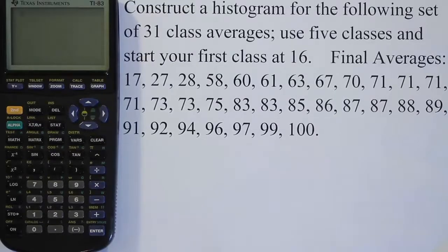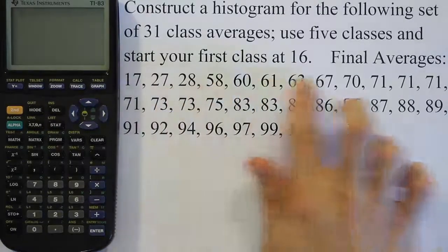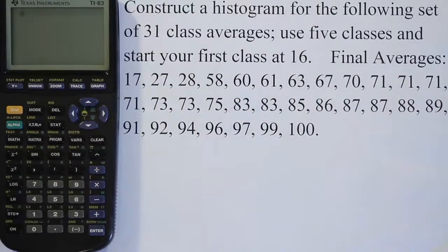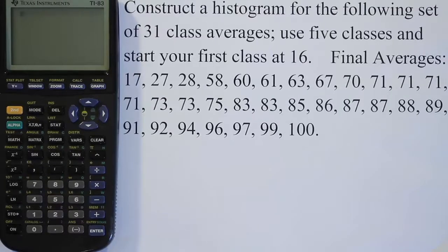In this video we're discussing how to construct a histogram using the following set of data here. All these numbers are basically students' individual class averages and we have 31 of them. We want to draw a histogram. I'm going to be doing this problem with the TI-83 graphing calculator. This calculator will make this process a lot more user friendly than doing it by hand. So let's learn how to do it first.